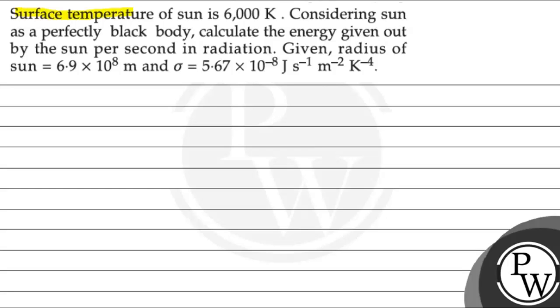Hello, let's read this question. Surface temperature of the sun is 6000 Kelvin. Considering sun as a perfectly black body, calculate the energy given out by the sun per second in radiation. Given the radius of the sun is 6.9 into 10 to the power 8 meter, sigma is 5.67 into 10 to the power minus 8 joule per second per meter square into kelvin to the power minus 4.